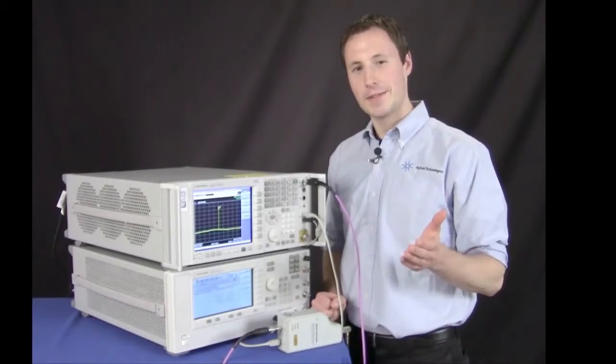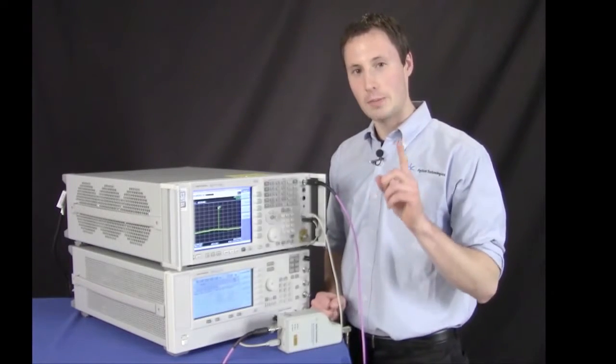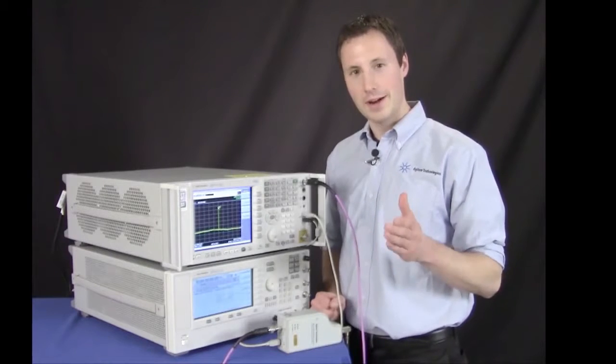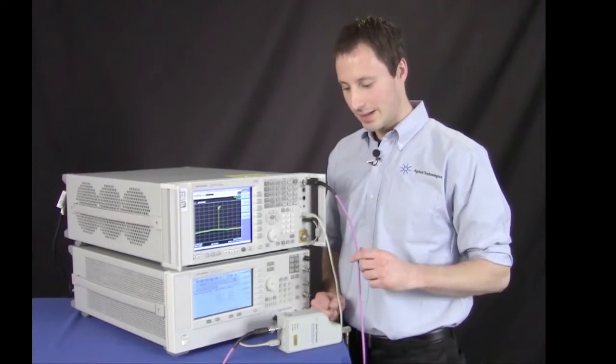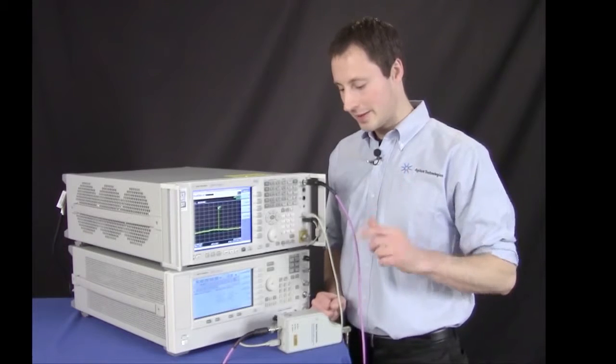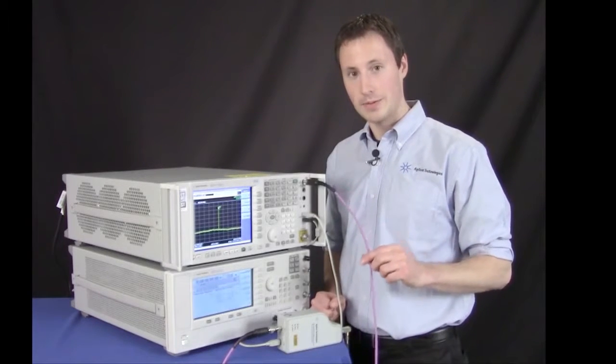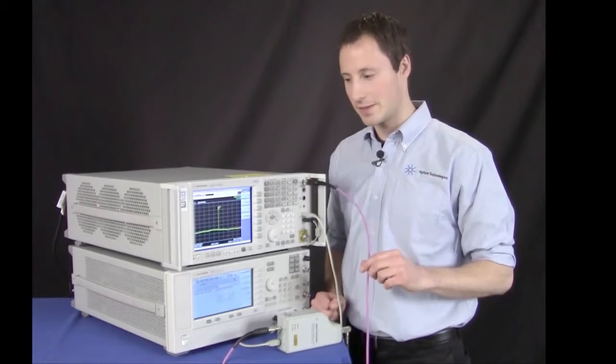Now that the LO has finished aligning we still have one more step. We have to account for the loss in the IF path. The reason why we do this is we are using a single cable for both the LO and the IF signals.